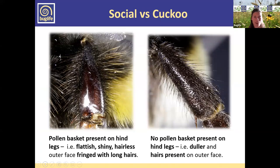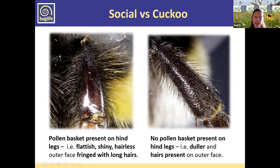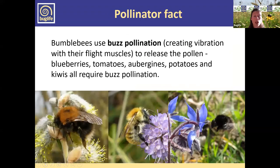So on the left here we've got a social bee's hind leg — queens and workers — which have this flat, shiny, hairless area surrounded by really long hairs, where she collects the pollen. On the right we've got a female cuckoo bee's hind leg — no pollen basket, so it doesn't have this flat shiny area, and it is all covered in hairs. If you catch a bee in a pot and look with a hand lens, you can see this difference quite easily.